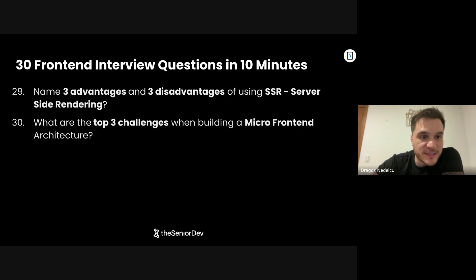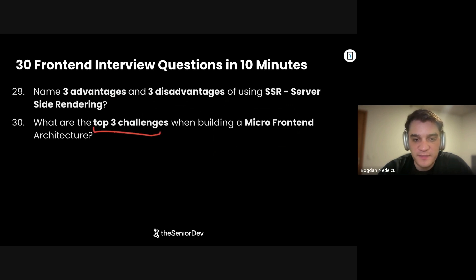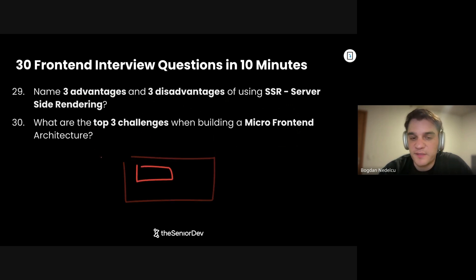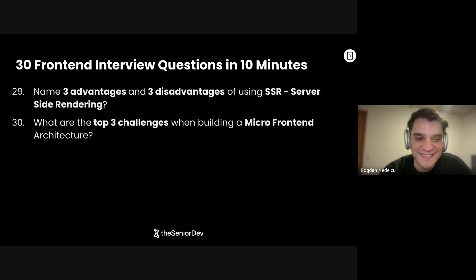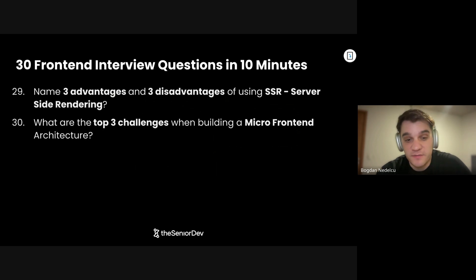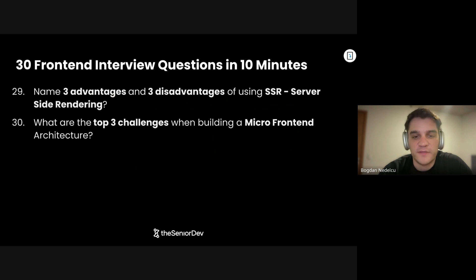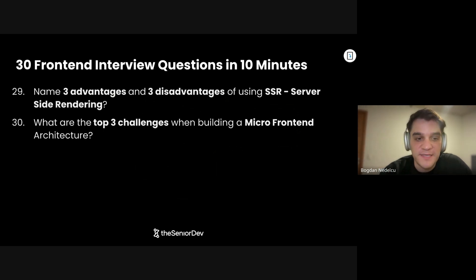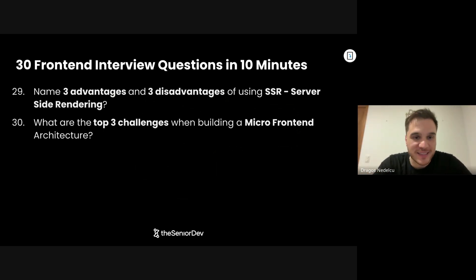Moving on to question number 30: What are the top three challenges when building a micro front-end architecture? Building micro front-ends means having different front-ends that deploy independently and a shell that puts them together. Number one is maintaining visual consistency — they all have to share CSS styles, which is never easy. Number two is complexity — it takes sophisticated work to compose everything in the shell without errors. Number three is shared state — the shell has to inject authentication state or user settings into all the different micro front-ends. Amazing questions, but you made it to the end! If you're interviewing right now, check out the free technical assessment to find your gaps and interview readiness. See you in the next one.